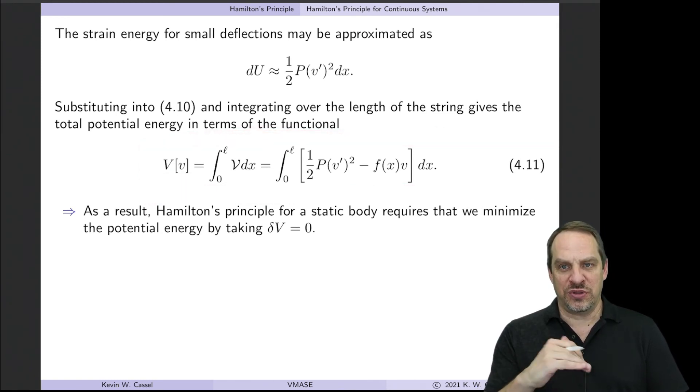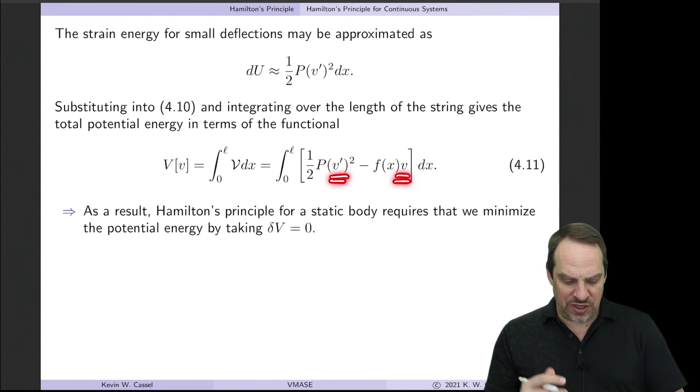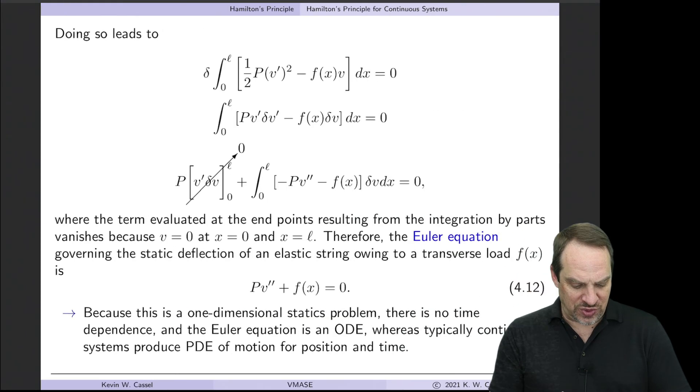So we're going to take the variation of this and set it equal to zero to determine what the stationary function V of X is that minimizes the total potential energy. So we take the variation of our functional. The variation of something squared is 2 times the something times the variation of the something. And then the variation of F, which is known, that's zero. And only V varies. So this is F of X times delta V. We use integration by parts to move the derivative off the delta V onto the V prime to get minus V double prime times delta V. The terms evaluated at the end points vanish because the boundary conditions, the displacements are zero at both ends. So we have an integral of this thing in square brackets with no deltas times delta V, where V is our dependent variable. So the thing in square brackets set equal to zero is our Euler equation.